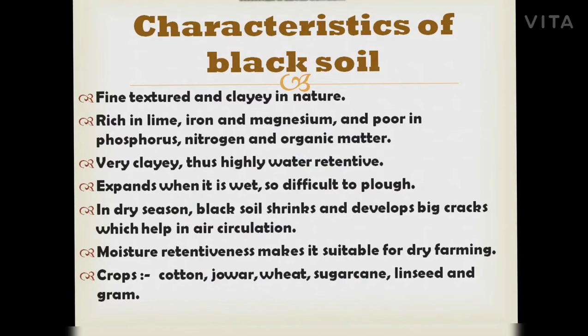Characteristics of black soil: it is fine-textured and clay in nature. It is rich in lime, iron, and magnesium, but poor in phosphorus, nitrogen, and organic matter. It is very clayey and highly water-retentive. It expands when wet, making it difficult to plow. In the dry season, it shrinks and develops big cracks, which help in air circulation. Its moisture retentiveness makes it suitable for dry farming. Crops grown include cotton, jowar, wheat, sugarcane, linseed, and gram.